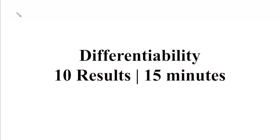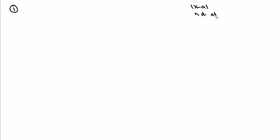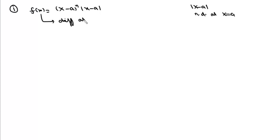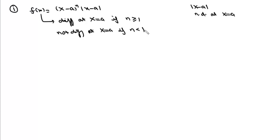There are some standard results which you can use while solving questions. The first result is: mod(x) is not differentiable at x = 0, and similarly mod(x - a) is not differentiable at x = a. But if we have a function f(x) = (x - a)^n · mod(x - a), then this function will be differentiable at x = a if n ≥ 1, and not differentiable at x = a if n < 1.